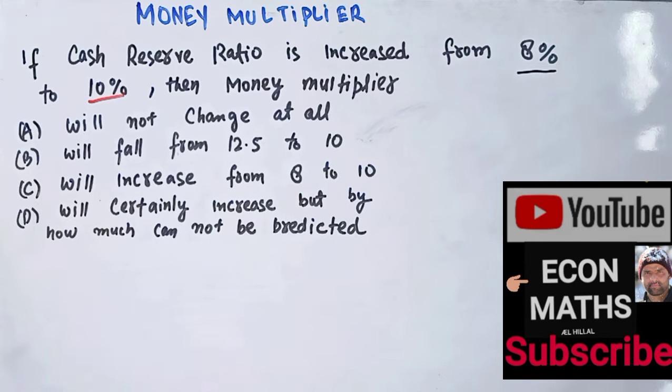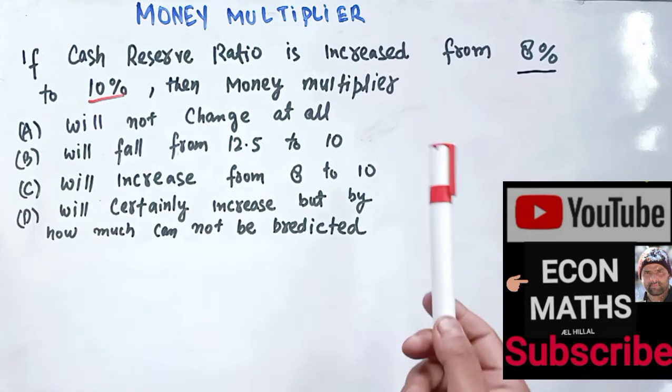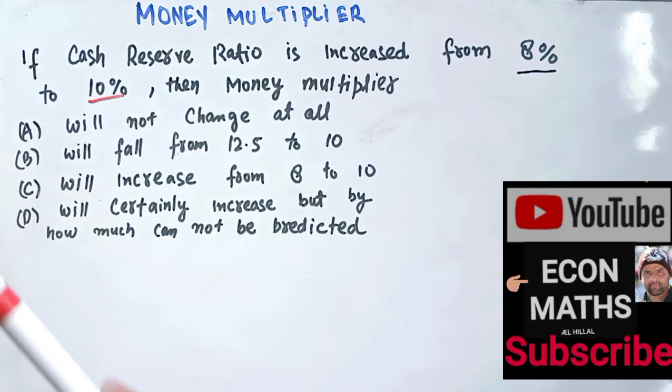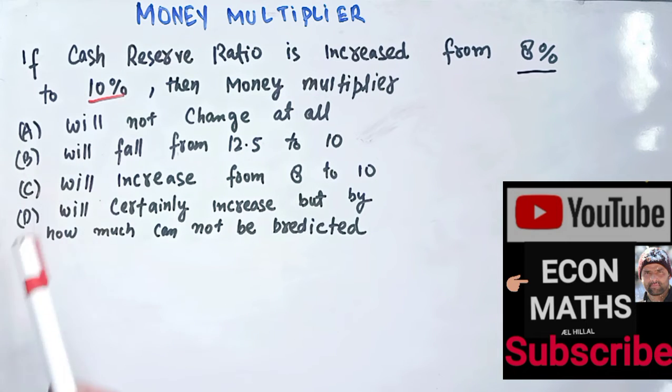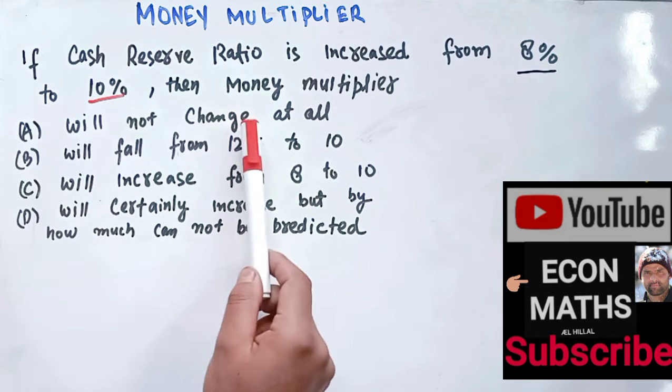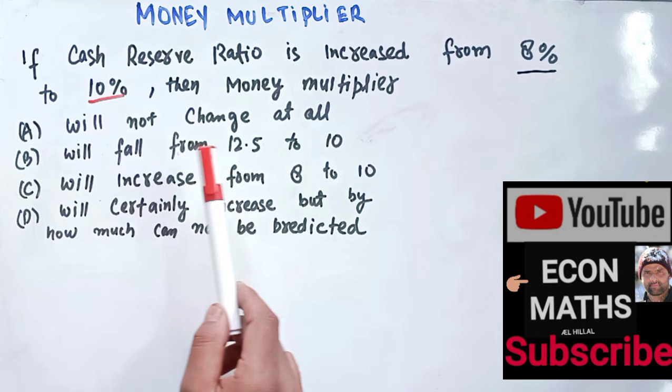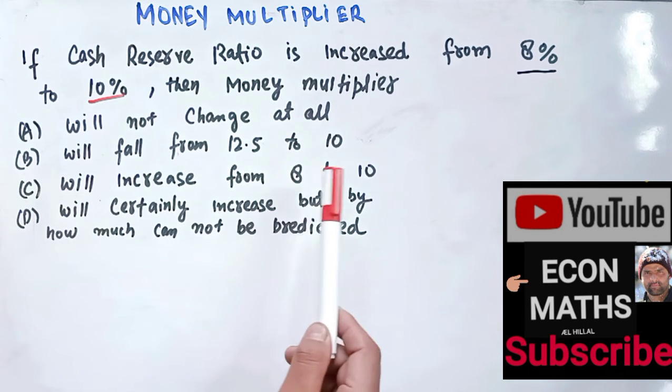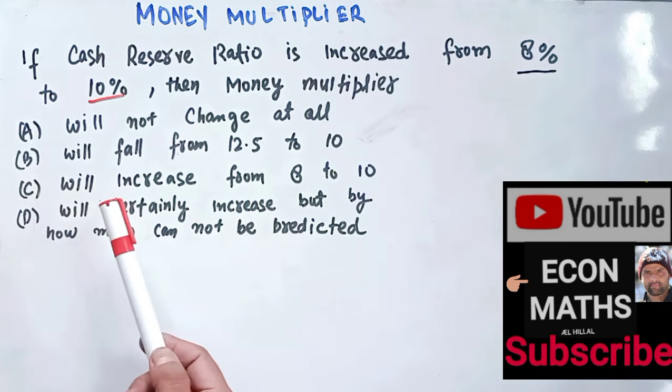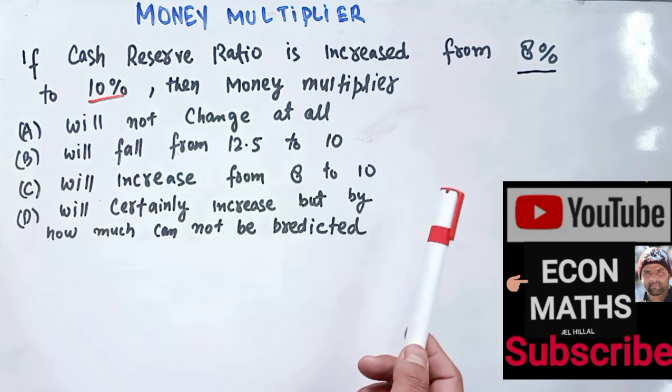In this video we will solve a problem on money multiplier. The question is: if cash reserve ratio is increased from 8 percent to 10 percent, then money multiplier will: (a) will not change at all, (b) will fall from 12.5 to 10, (c) will increase from 8 to 10, and (d) will certainly increase but by how much we cannot predict. Let us see which of these options is correct.